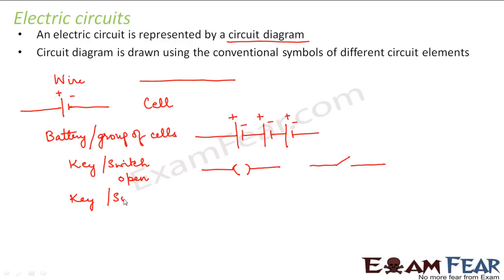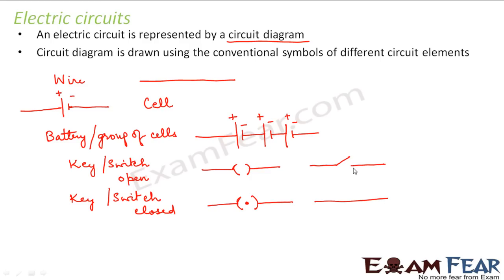Now if you want to represent a key or a switch which is closed, you represent it with a dot. That means the key is closed — you have pressed it. So the open symbol means the switch is off, and the closed symbol with the dot means the switch is on.